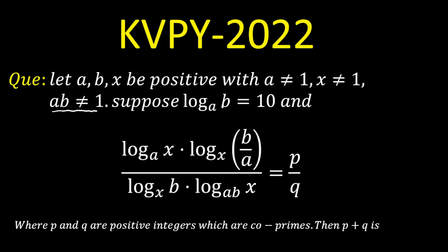Now they have given suppose log b to the base a is 10, and this given expression is given in the form of p by q which involves a, b and x with different bases as you can see here. p and q are positive co-prime numbers. They are asking the value of p plus q.